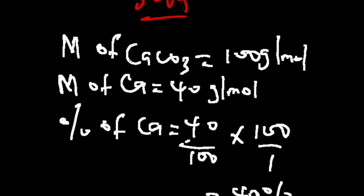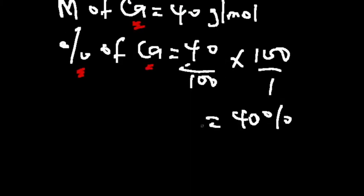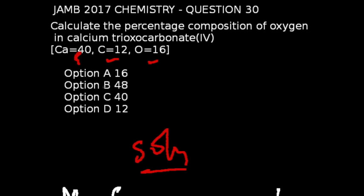We have the molar mass of calcium trioxocarbonate(IV) is 100 grams per mole, and the molar mass of calcium to be 40 grams per mole. So the percentage composition of calcium will simply be 40 all over 100 multiplied by 100 over 1. That is 40%. This corresponds to option C. So option C becomes the correct answer to this question.